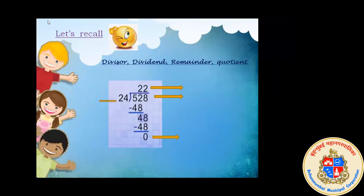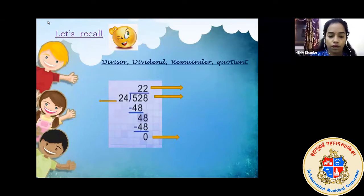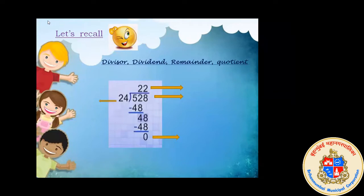These numbers have their own names. I would like to ask you to tell me what these numbers are called. What is 22 known as? A student answers: quotient. Very good. 22 is known as the quotient — that is the answer of the division sum that we get.